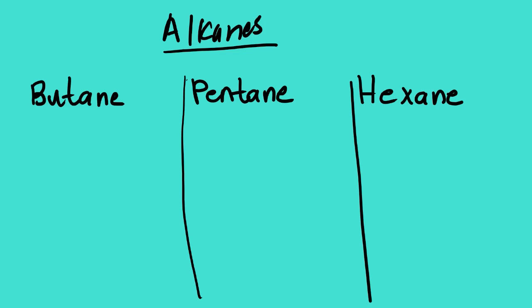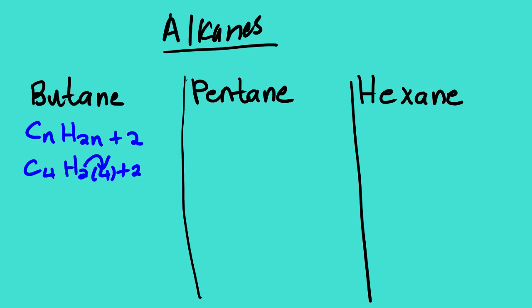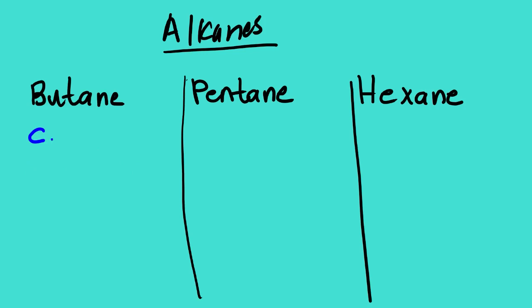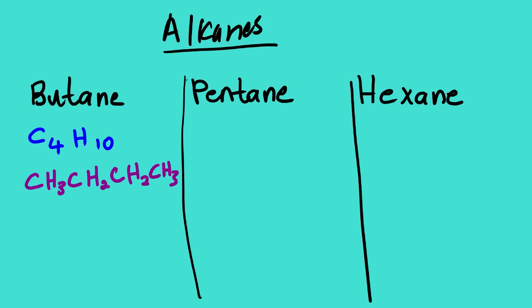Now I believe you know how to draw the Lewis structure, so we are going to look at the condensed and molecular formula and the line structure of the following compounds. The molecular formula of butane: butane has 4 carbons. Using CnH(2n+2): 2×4=8, plus 2 is 10, so it's C4H10. The condensed formula is CH3CH2CH2CH3. When we add the hydrogens we get 10, and carbons we get 4. The line structure has 4 segments representing 4 carbons, with the ends representing the carbons.